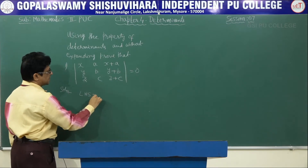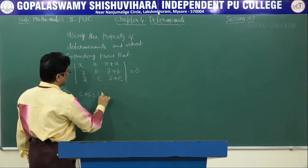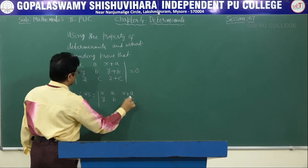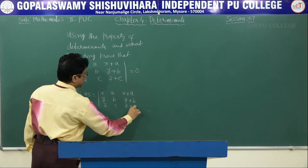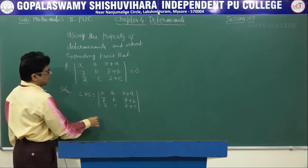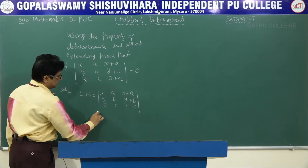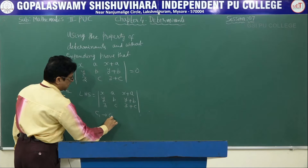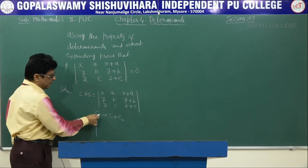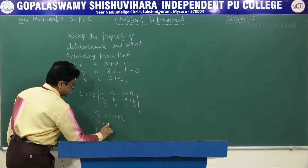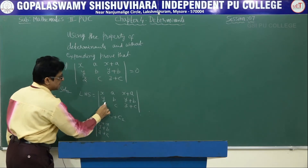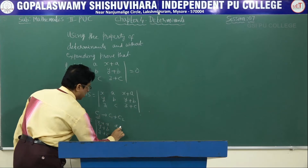Solution. Let us consider the LHS of the given problem. LHS equals determinant of x, a, x plus a; y, b, y plus b; z, c, z plus c. Here I use the column operation: C1 is replaced by C1 plus C2. So the first column becomes x plus a, y plus b, z plus c, and the remaining columns are written as they are.